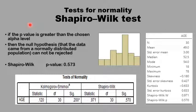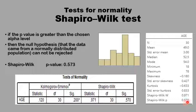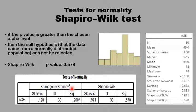On the other hand, if the p-value is greater than the chosen alpha level — usually 0.05 — then the null hypothesis that the data is normally distributed cannot be rejected. This set of data has a Shapiro-Wilk W of 0.97, which is close to 1, and a p-value of 0.57. Since 0.57 is higher than 0.05, we have no reason to reject that this set of data has a normal distribution.